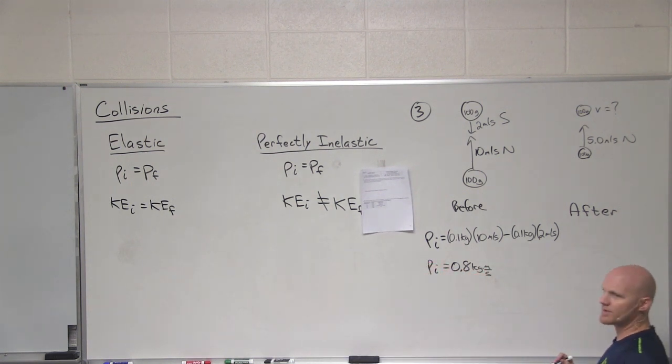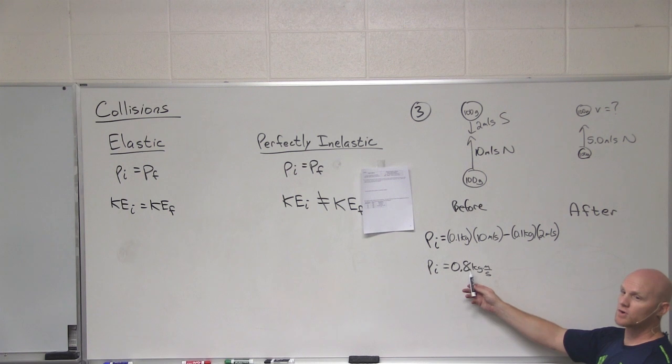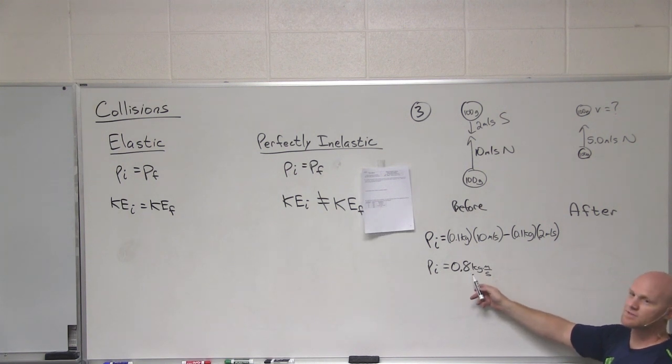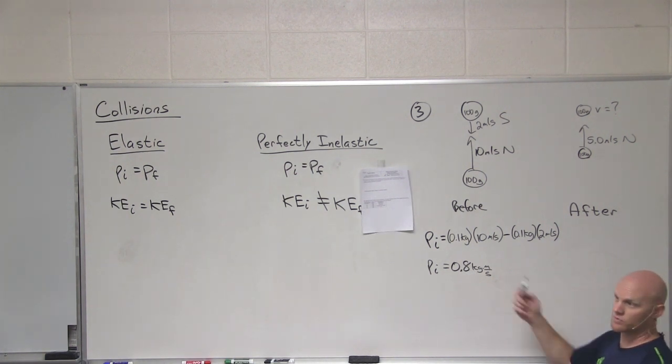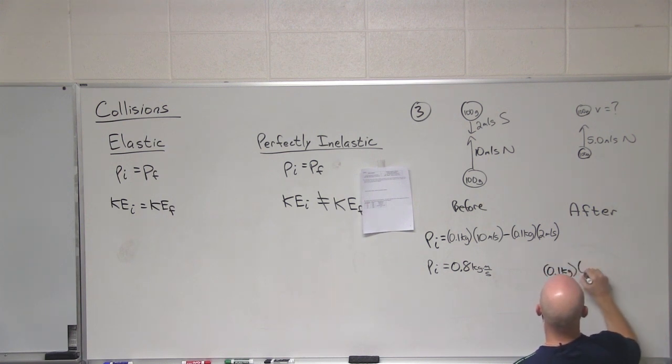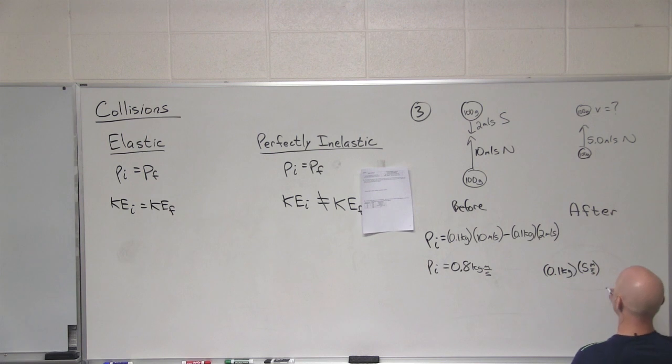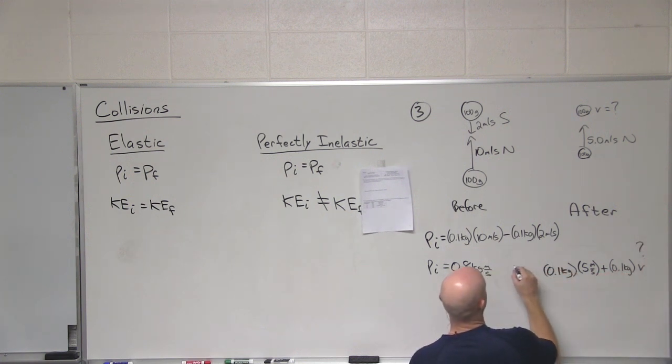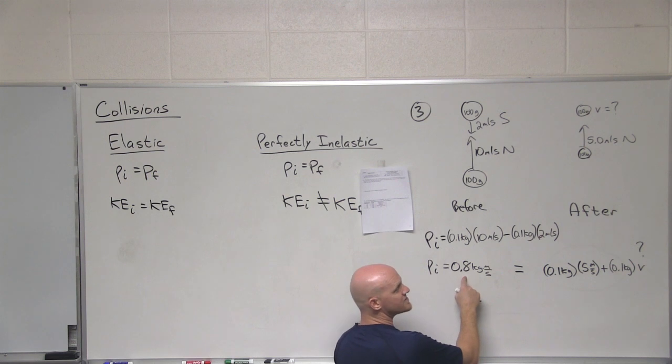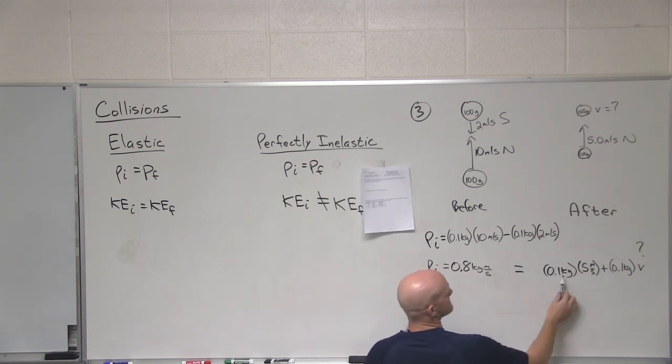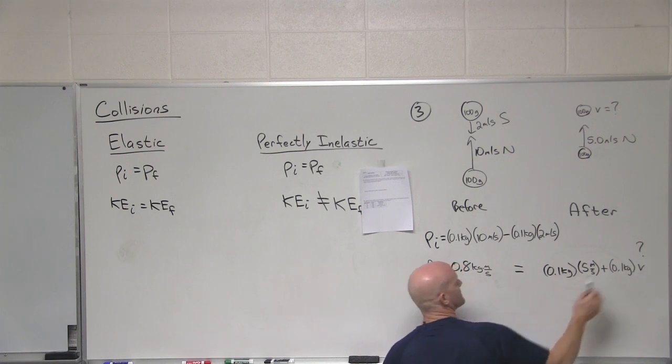All right. After the collision here, it has to overall be towards the north. And so in this case, we know the momentum of object number one. So it's 0.1 kilograms times 5 meters per second. That's north, so it's positive 5. And then the second one is 0.1 kilograms times some velocity that we don't know. But we still know that this has to total out to our initial momentum because momentum is conserved. And so in this case, if these add up to 0.8, what does this velocity have to be?